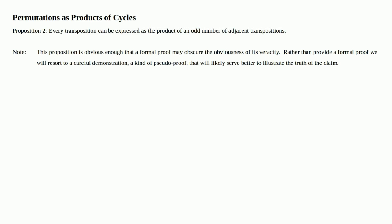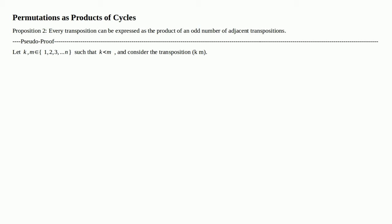Note: this proposition is obvious enough that a formal proof may obscure the obviousness of its veracity. Rather than provide a formal proof, we will resort to a careful demonstration — a kind of pseudo-proof that will likely serve better to illustrate the truth of the claim. Let K and M be in the set 1 through N, such that K is less than M, and consider the transposition KM.